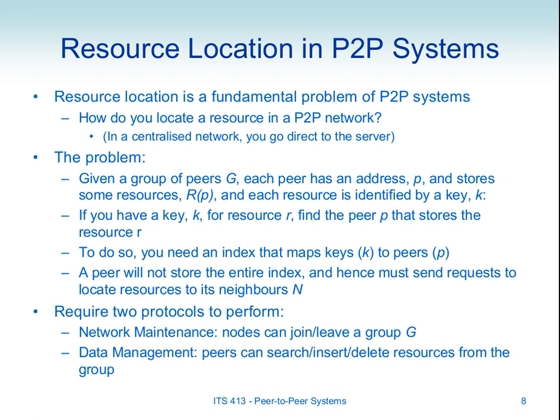In a peer-to-peer system, one of our potential advantages is we distribute the functionality across many different computers — we don't have a central server that stores this index, at least in some systems. So if we want to distribute this, we may store some of the index on different peers, we may store the entire index duplicated on each peer, or in fact store no index information on any peers. We'll see some different approaches.